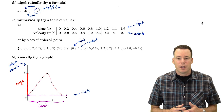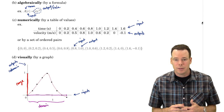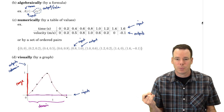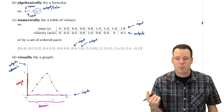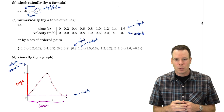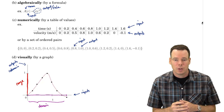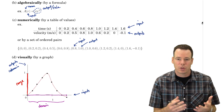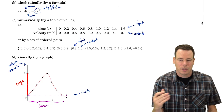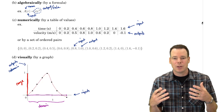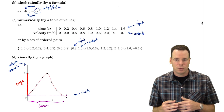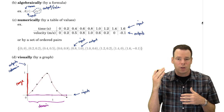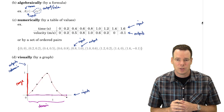With these four different ways to define a function, we're going to need to be able to move between representations. We may be given a verbal description and need to find a formula, or be given a table of values and want to construct a formula — going from numerical to algebraic. Or we may be given an algebraic description and want to graph it — going to a visual representation. We'll want to be able to go between all four representations of a function.